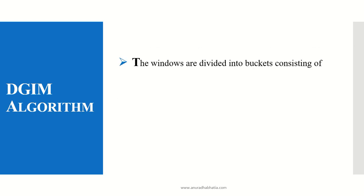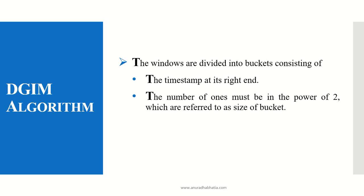The window is divided into buckets, each consisting of bits — zeros and ones — and identified by the timestamp at its right end. The number of ones in a bucket must be a power of 2, which is referred to as the size of the bucket. That is, we consider bucket sizes starting from 1, 2, 4, 8, and so on.